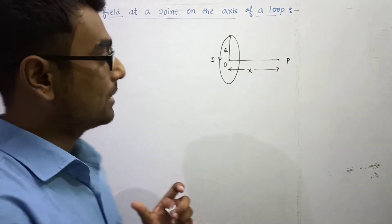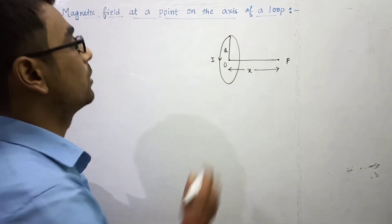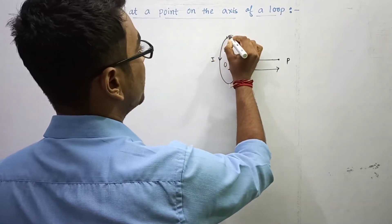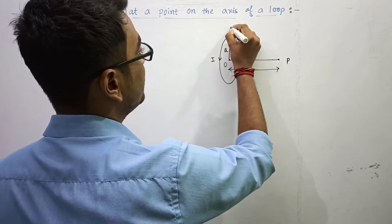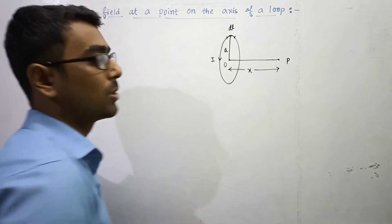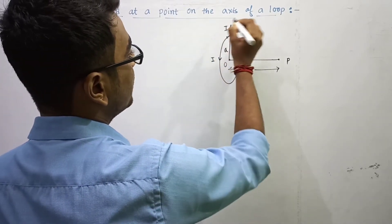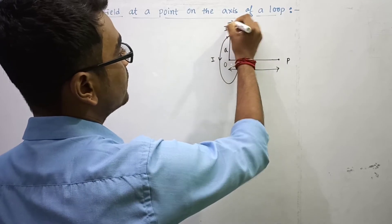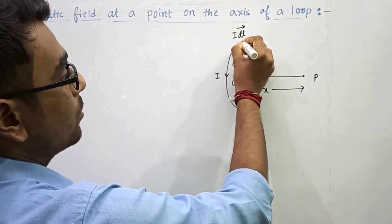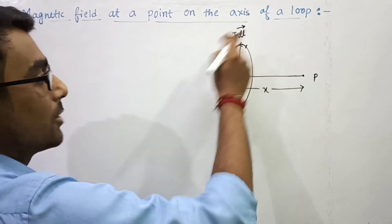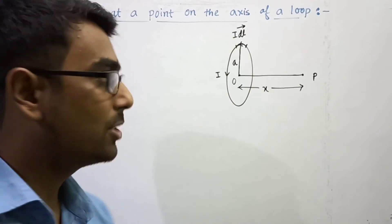So what process will we apply? We will consider a small elementary portion of the circular loop, which we name dL. So I·dL will be the current element, which is a vector quantity, and this vector is in the tangential direction — because current is in that direction, so I·dL will be in that tangential direction.